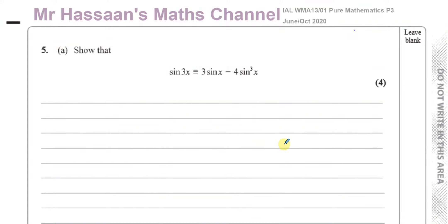Welcome back, this is Mr. Hassan's Math Channel, and this is question number 5 from the International A-Level Pure Mathematics P3 June-October 2020 exam paper. This question is all about trig identities, and here we're asked to show that sine of 3x is equal to 3 sine x minus 4 sine cubed x.